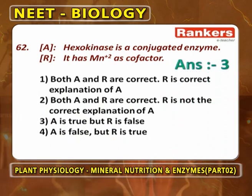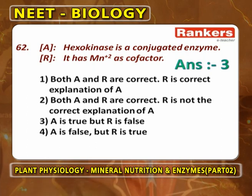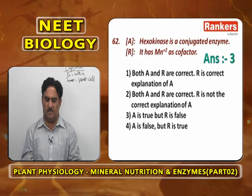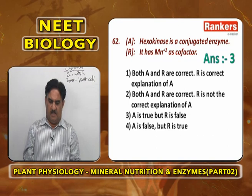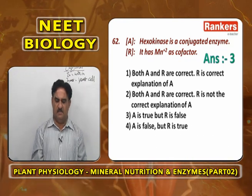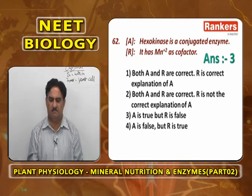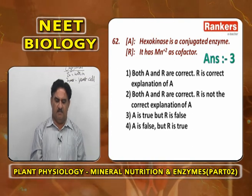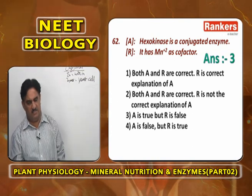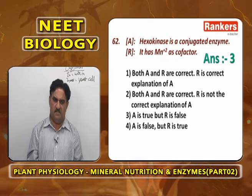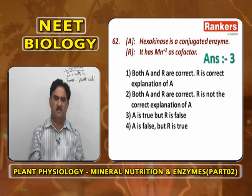Assertion-reasoning: Hexokinase is a conjugated enzyme — correct, because it has a protein part (apoenzyme) and a non-protein cofactor. But the reason states it has manganese as cofactor — this is wrong. Hexokinase has magnesium as its cofactor, not manganese. So assertion is correct but reason is false — third option.